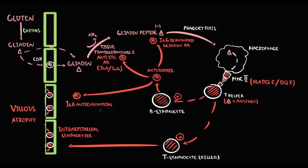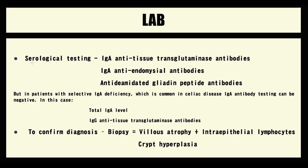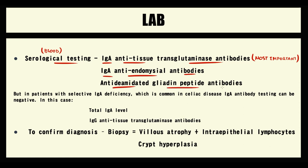To summarize: the trigger for celiac disease is gluten consumption, because gluten contains gliadin to which some people are intolerant. Individuals with gluten intolerance typically have HLA-DQ2 and HLA-DQ8 alleles. In response to gliadin, the immune system produces antibodies. The most common are IgA anti-tissue transglutaminase antibodies, followed by IgG antibodies against deaminated gliadin, and IgA anti-endomysial antibodies. These antibodies are used for the serological diagnosis of celiac disease, with IgA anti-tissue transglutaminase antibodies being primary due to their high frequency.